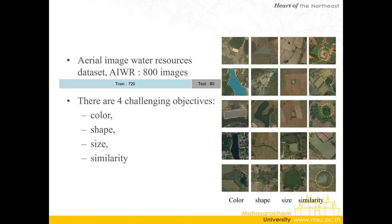The aerial image water resource dataset, AIWR, has 800 images. Therefore, 600 aerial images were used for learning and creating the model, 80 images were used for validation, and the remaining 80 images for test. This dataset is challenging for instance segmentation because water body are W1 and W2 types. There are four challenging object properties: color, shape, size, and similarity, as shown in the picture.